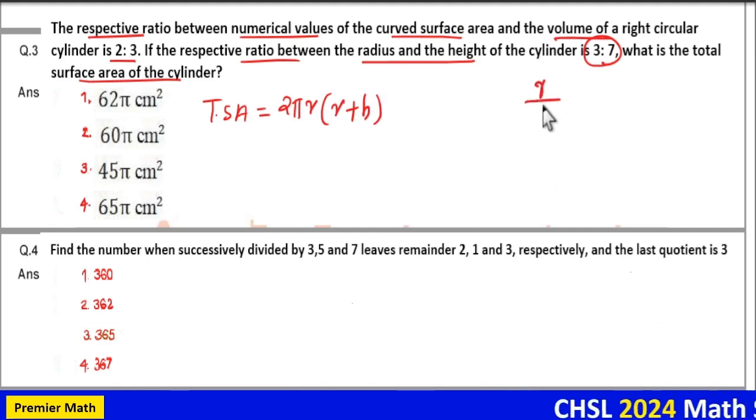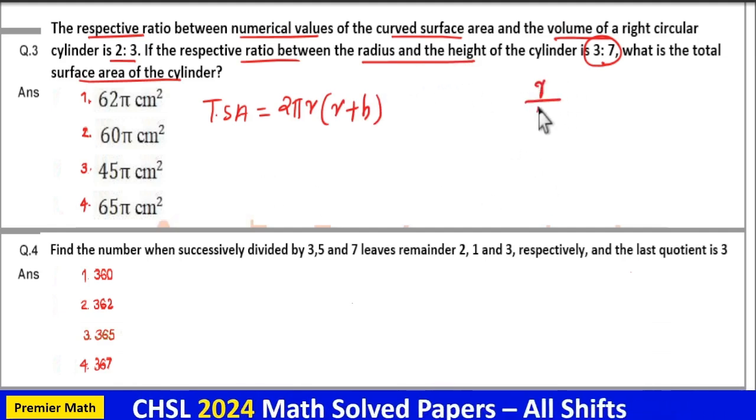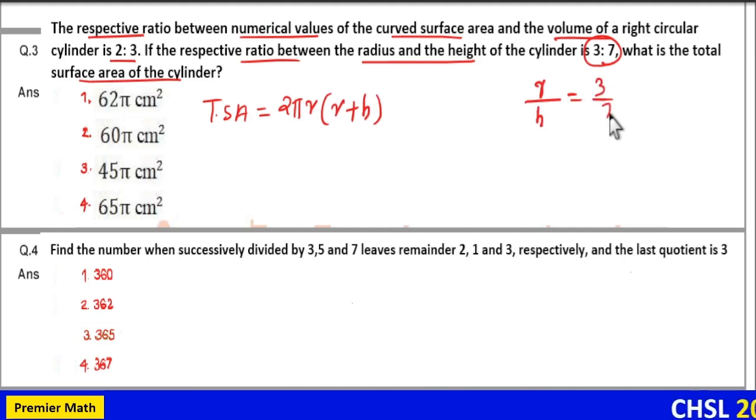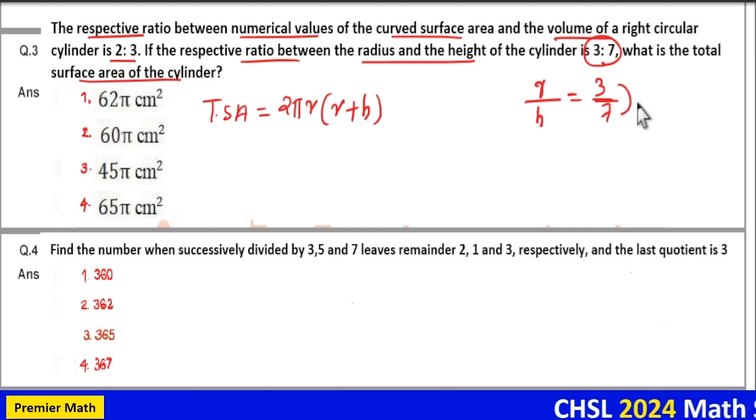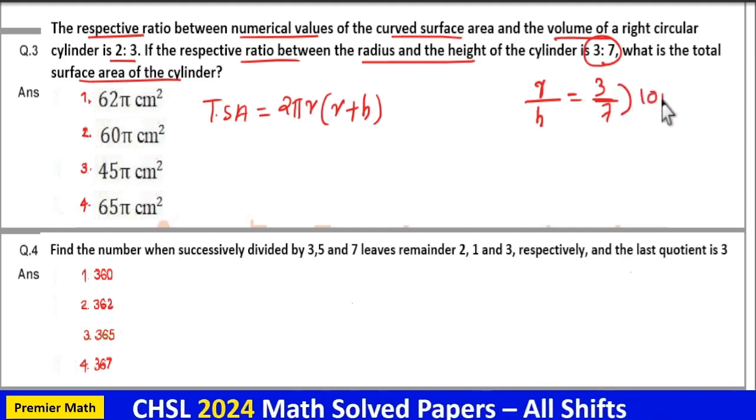Now, the ratio of radius and height is given as 3:7, which means r + h is 3 + 7, or 10 parts.